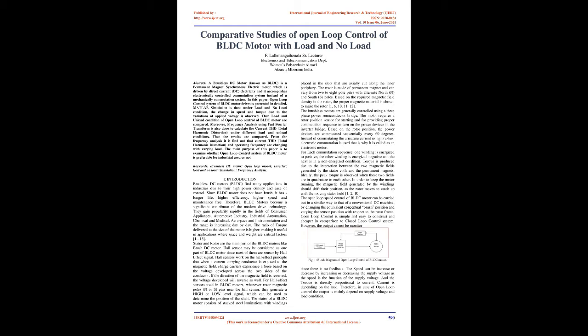Stator and rotor are the main parts of the BLDC motor, like brush DC motors. Hall sensors may be considered as one part of BLDC motors since most of them are sensed by Hall effect signals. Hall sensors work on the Hall effect principle: when a current-carrying conductor is exposed to a magnetic field, charge carriers experience a force based on the voltage developed across the two sides of the conductor. If the direction of the magnetic field is reversed, the voltage developed will reverse as well. For Hall effect sensors used in BLDC motors, whenever rotor magnetic poles (N or S) pass near the Hall sensor, they generate a high or low level signal which can be used to determine the position of the shaft.